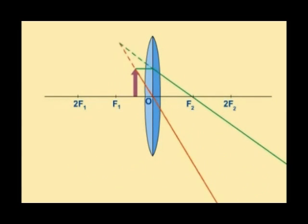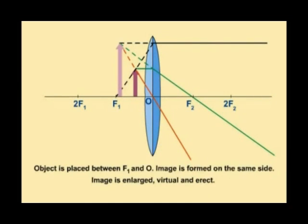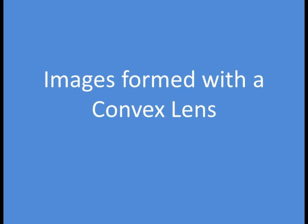Moving even closer to the lens and you'll see to get the lines to join up you have to draw virtual rays backwards so you get a virtual image. And this image is still magnified but it is now upright and on the same side as the lens and it acts as a magnifying glass.